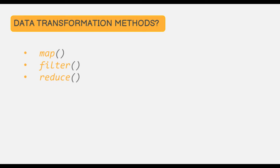The map method loops over an array and returns a new array with transformed data. The filter method filters for elements in the original array. And the reduce method reduces or boils down all array elements down to a single value. In this lecture, let's talk about the map method in detail, and in the next couple of lectures, we will learn about filter and reduce.